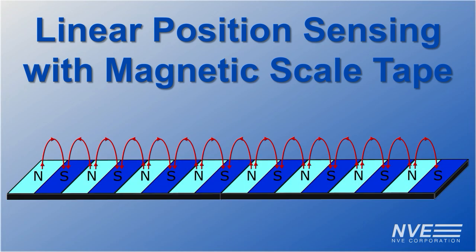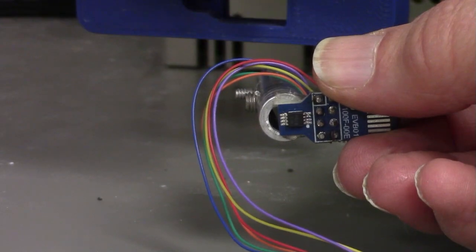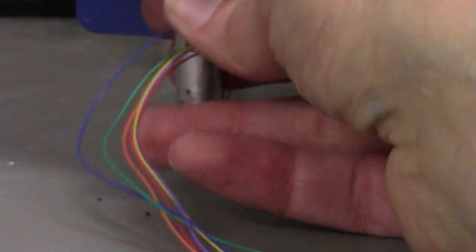We're demonstrating linear position sensing using magnetic scale tape and our new TMR magnetic encoder sensors. We're using this sensor breakout board. This particular sensor is optimized for one millimeter pitch magnetic scale tape.